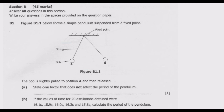Question B1: Figure B1.1 shows a simple pendulum suspended from a fixed point. The bob is slightly pulled to position A and then released, so we pull it to B and let it move freely.